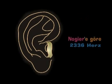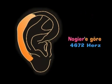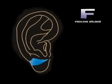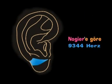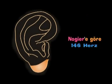D frekans bölgesi yani Tragos bölgesi Nojiye'ye göre 2336 Hz ile taranır. E frekans bölgesi yine Nojiye'ye göre 4672 Hz ile taranır. F frekans bölgesi Nojiye'ye göre 9344 Hz ile taranır.